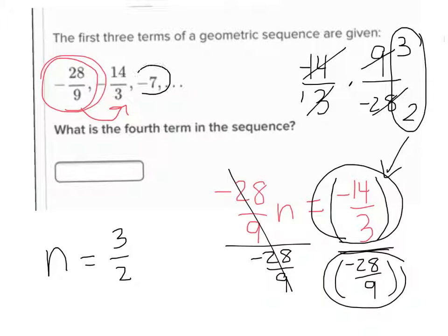And so your n is 3 halves. So now we've got to take that last term, negative 7, and multiply it by 3 halves, and you get what? Negative 10.5. So that's your fourth term right there.